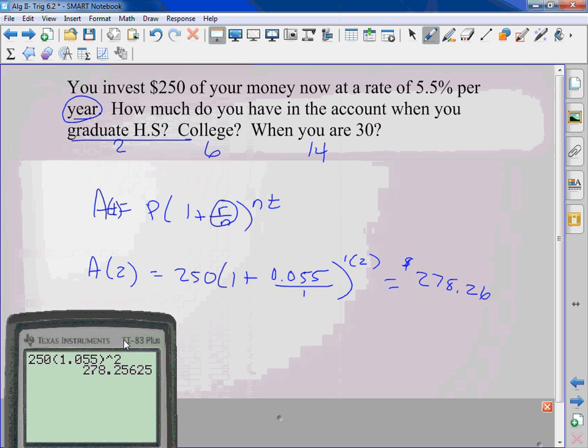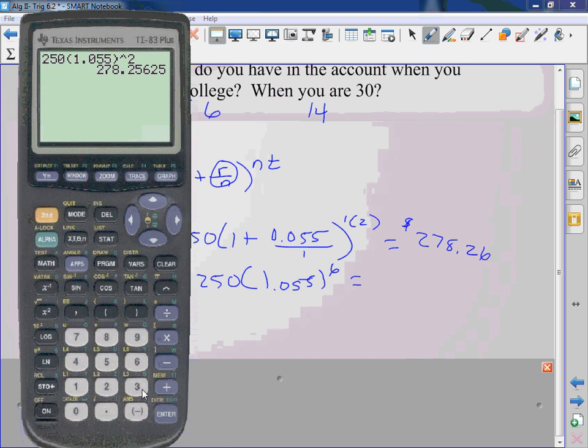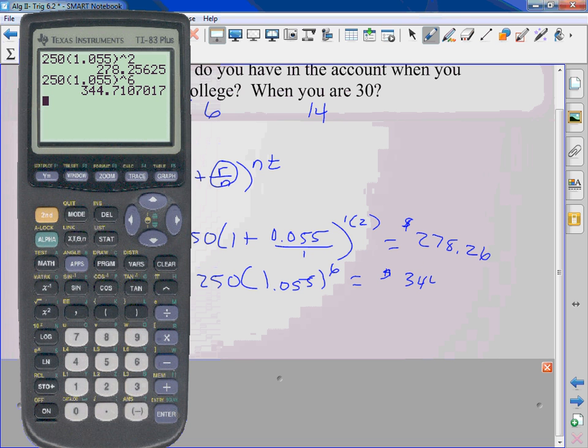That's only on 250 bucks. The more you put in, the more return you get. The longer it stays in there, the more money you make. So let's see after college. So it's 250, 1.055 now it's a 6. Instead of having to retype everything what can I do? Second enter. Now my time is 6 for 6 years. So after 6 years you will have $344.71.